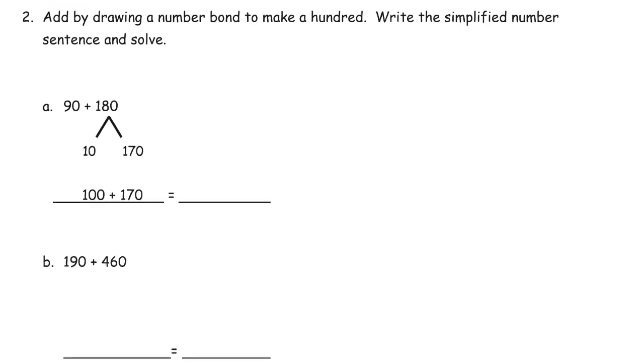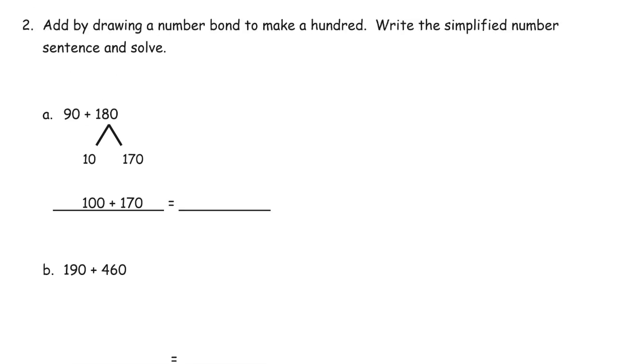Add by drawing a number bond to make 100. And then write the simplified number sentence and solve. Back in first grade, we used to make tens to add for smaller numbers. Now we're going to be making 100s to make it easier. It's just a way to think of easier numbers to add in your head. So the 100 here, we're just going to finish part A. 100 plus 170.